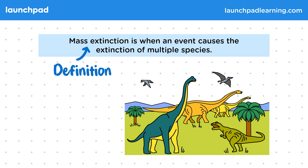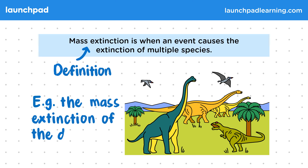An example of a mass extinction event in history would be the mass extinction of dinosaurs. So what have scientists learned about what happened here?